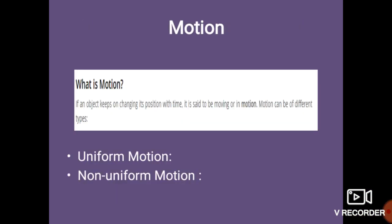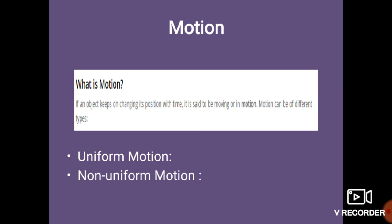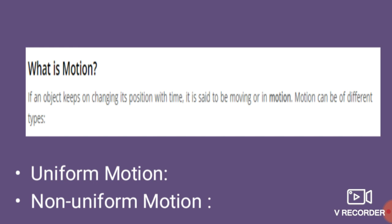What is motion? If an object keeps on changing its position with time, it is said to be moving or in motion. Any kind of object that changes its position — but that change in position occurs with time — is said to be moving or in motion. Motion can be of different types.